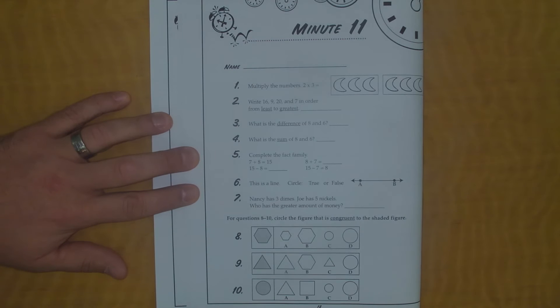Good morning, kids. Here's your math minute 11. Give me a second here and I'll zoom in. We'll do 1 through 5, pause it, do 6 through 10, check your work, and you're moving on.